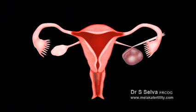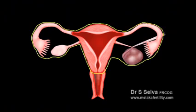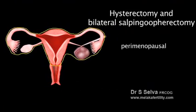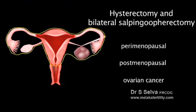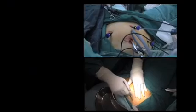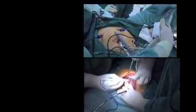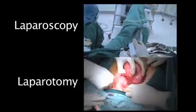Hysterectomy and bilateral salpingo-oophorectomy is the removal of the uterus and both ovaries. This is the preferred surgery in perimenopausal and postmenopausal women with ovarian cysts, and is also done in women with ovarian cancer. All these surgeries can be performed either by laparoscopy or laparotomy.